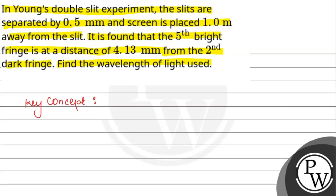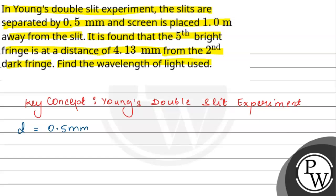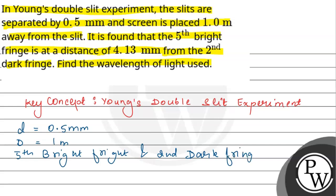We have Young's double slit experiment. In the question, we are given that the slit separation is 0.5 mm, the distance between the screen and the slits is 1 meter, and the distance between the 5th bright fringe and the 2nd dark fringe is 4.13 mm.